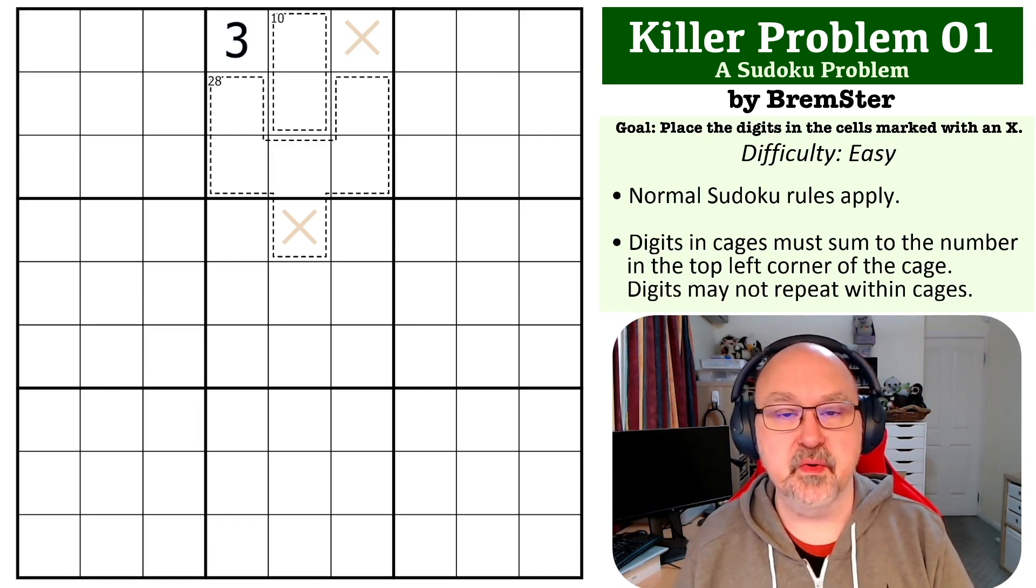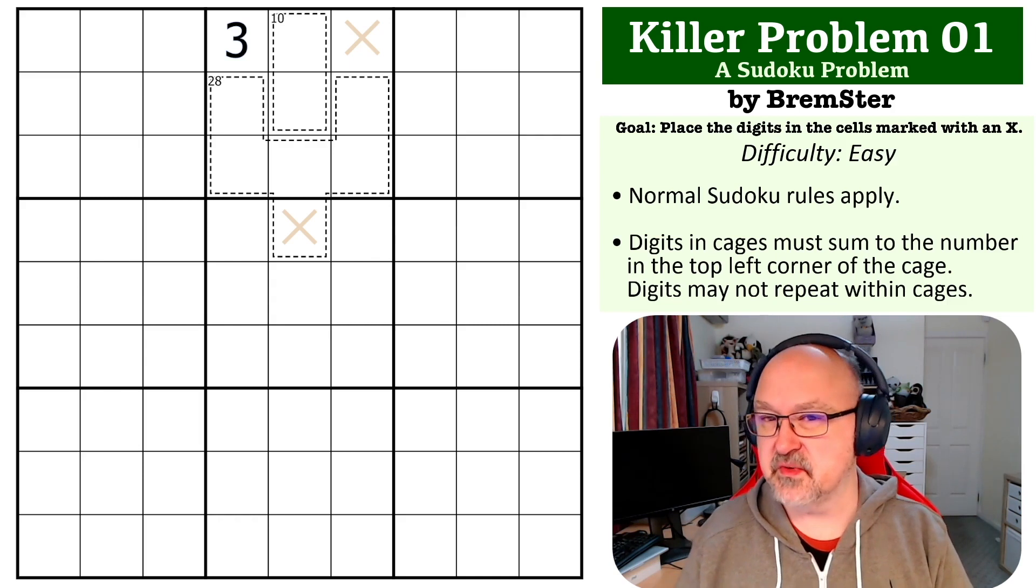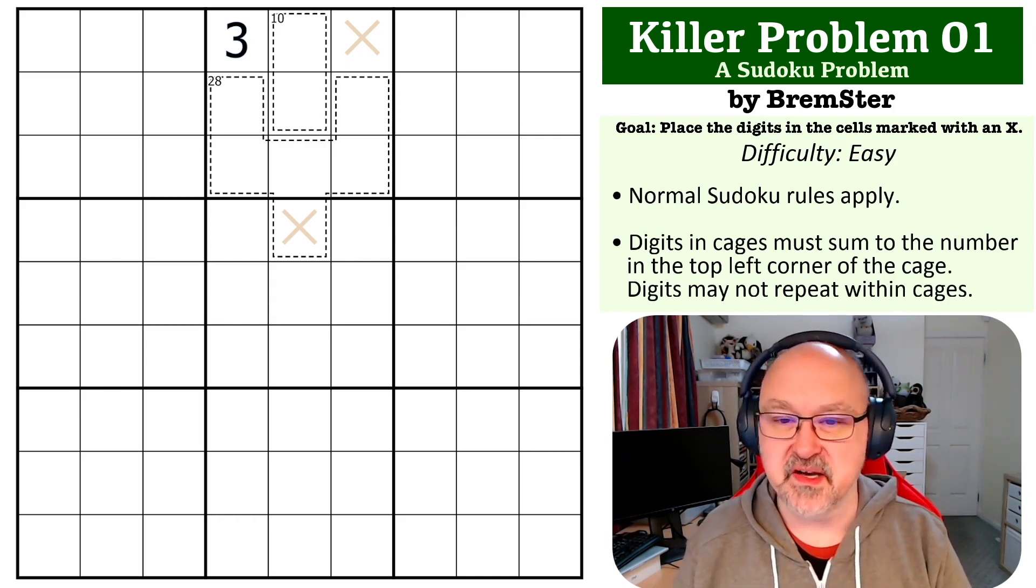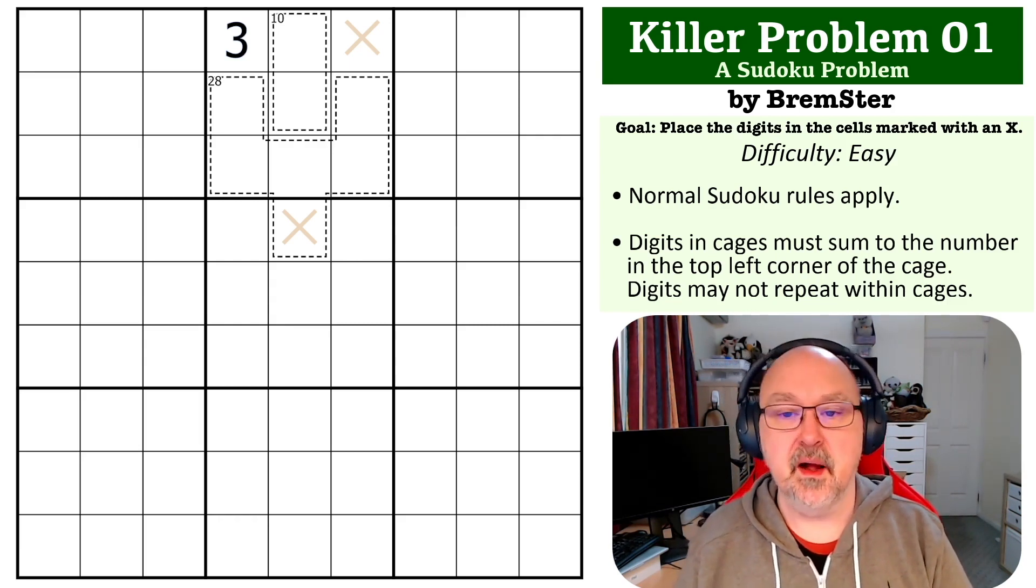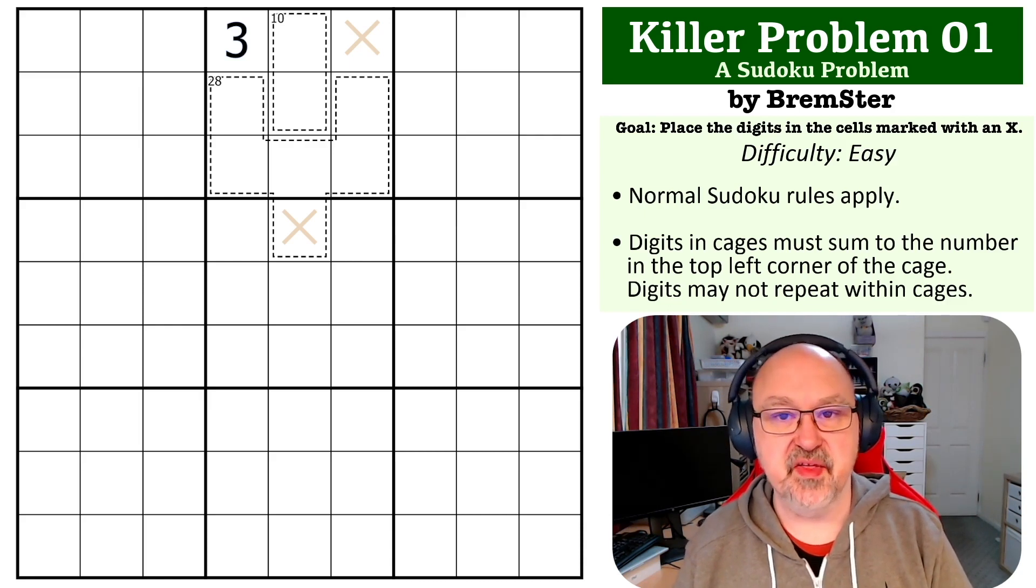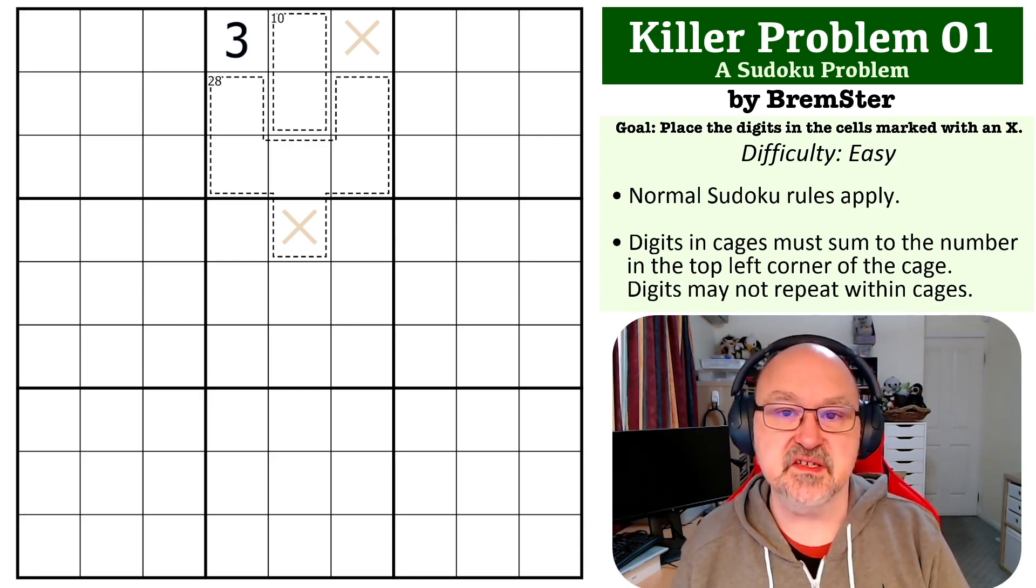And the goal with this, I've changed it from yellow squares, which I've done on a few previous ones, because there'd been some complaints about it, so I'm trying different ideas. So the goal with this is to place the digits into the cells marked with an X, and if you can place those digits, then you've completed this Sudoku problem.